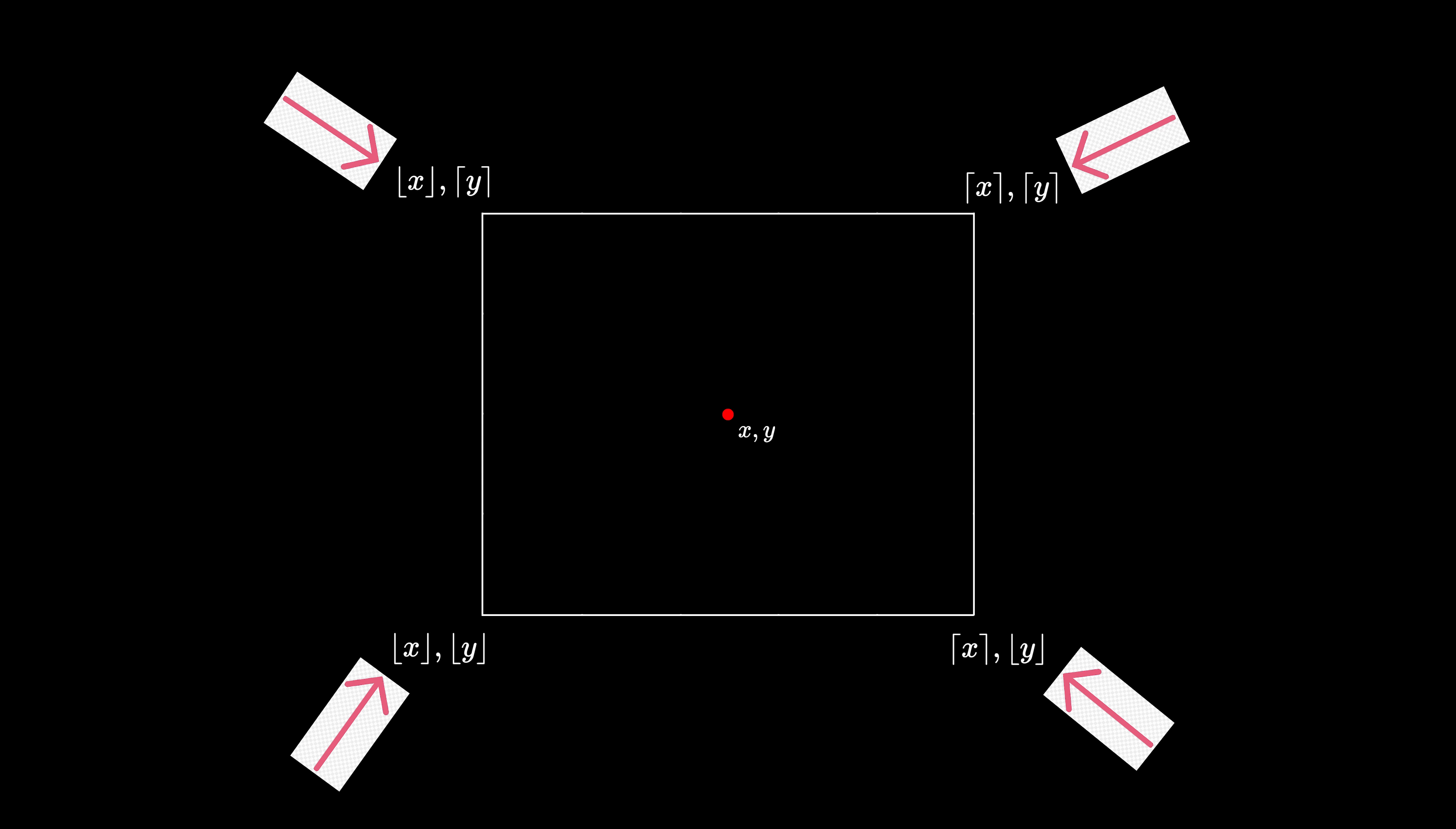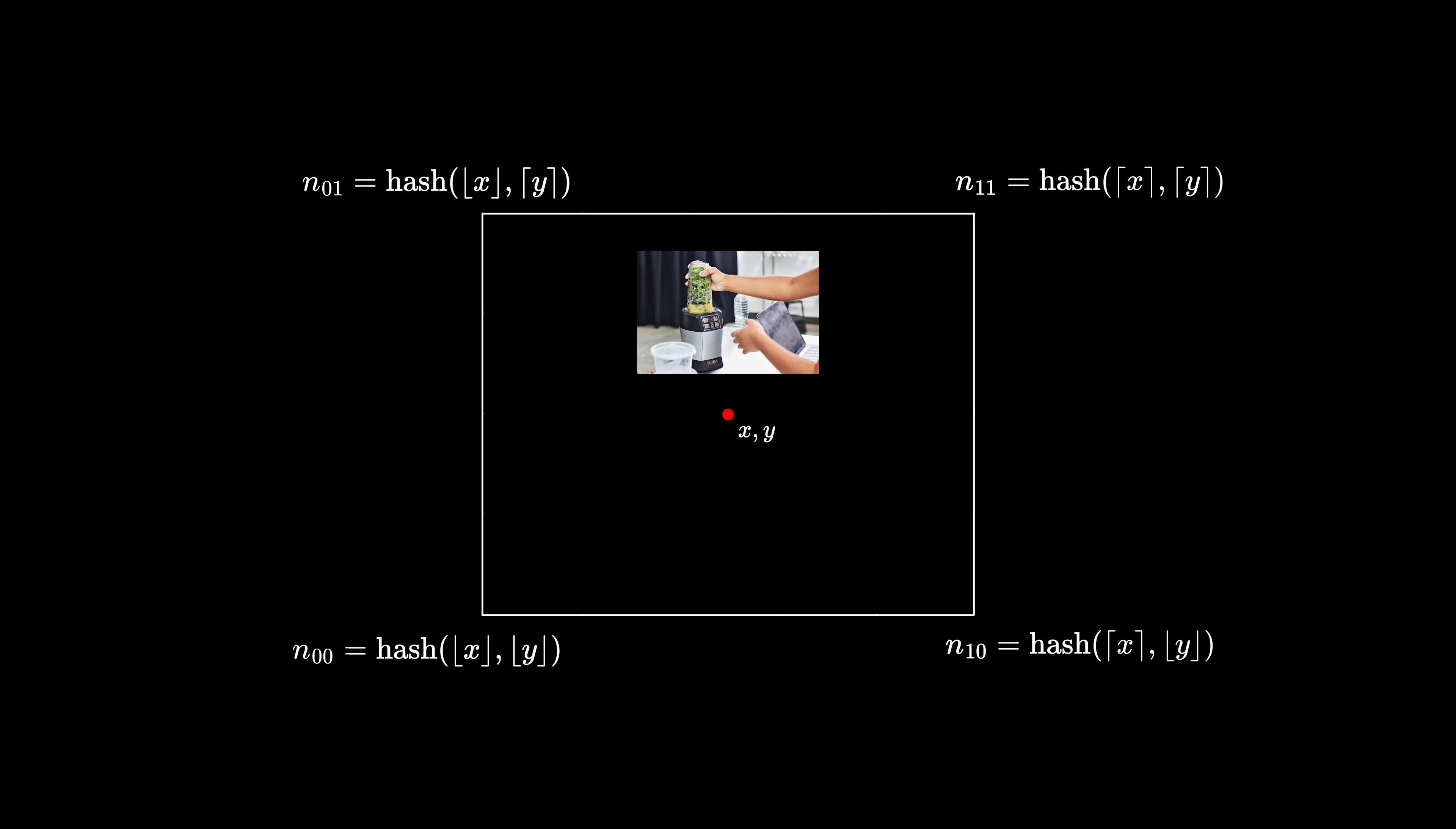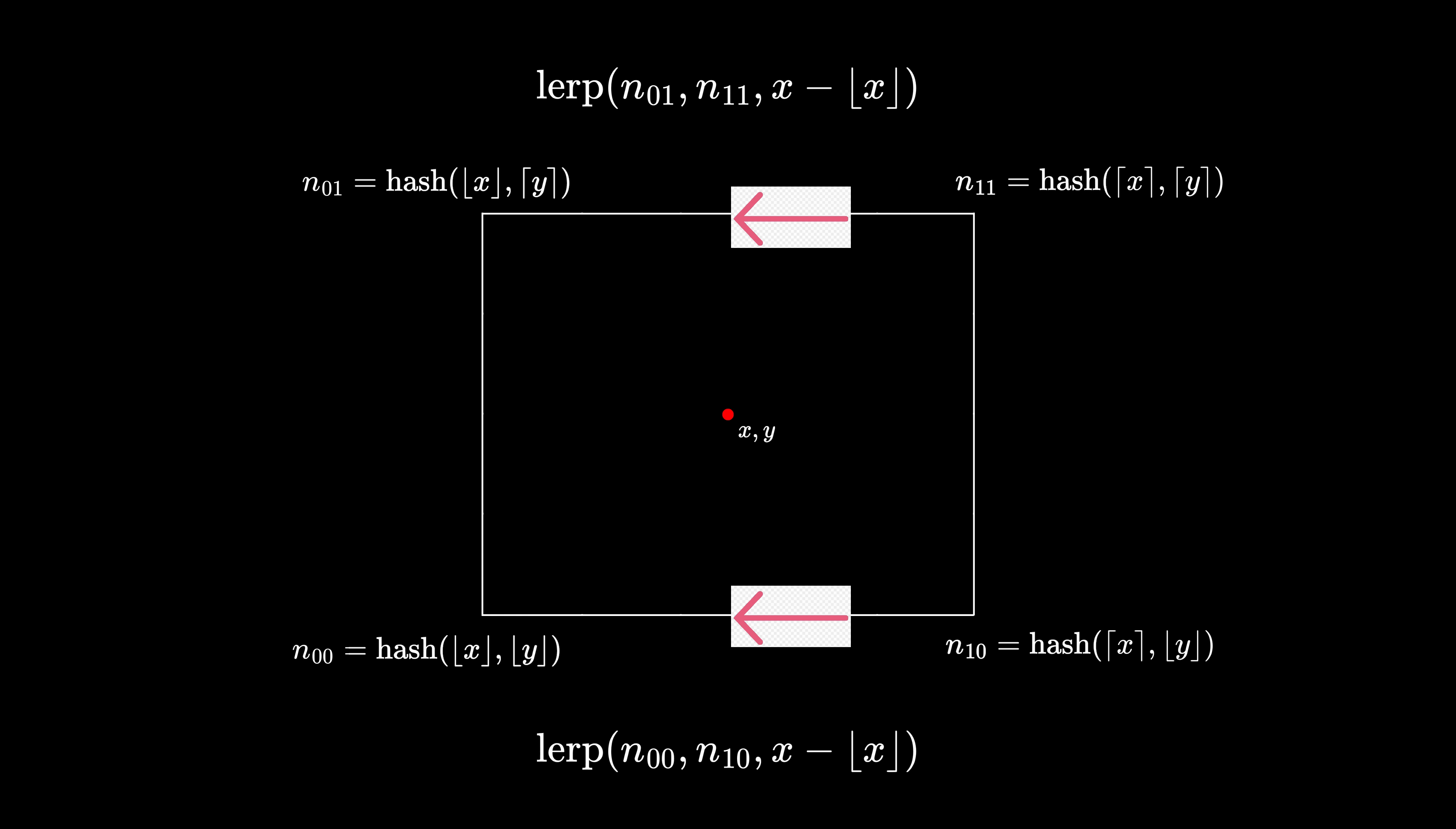Now we just need to blend between these lattice corners. For ease of demonstration, let's zoom into one square of our lattice. Given our input position, we once again take the floor and ceiling of the components to get the coordinates of the corners, and hash the positions to get the random numbers. In order to get the blended result, we first lerp between the bottom two corners on the x-axis, then lerp between the top two corners on the x-axis, and then finally lerp between those two values on the y-axis, using the fractional part of our input position, same as before.